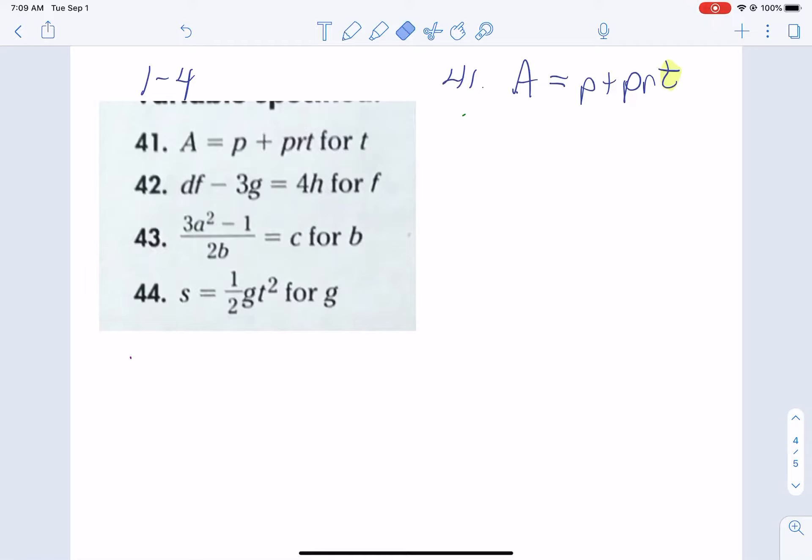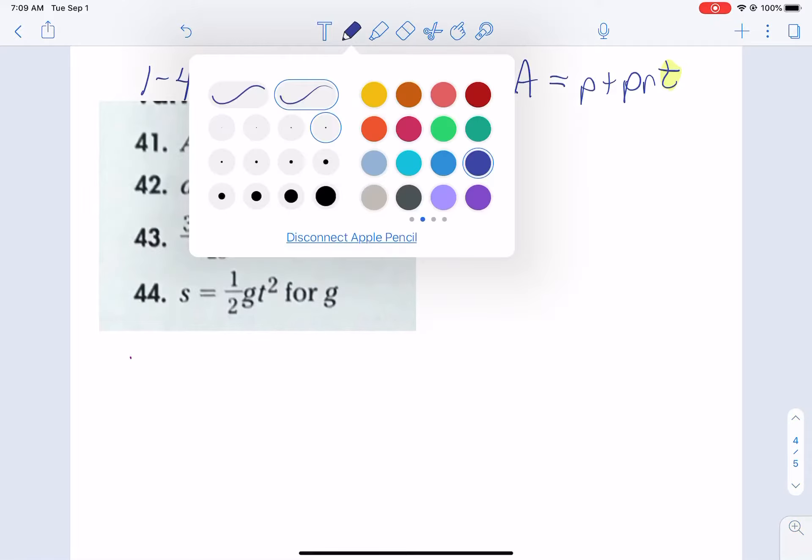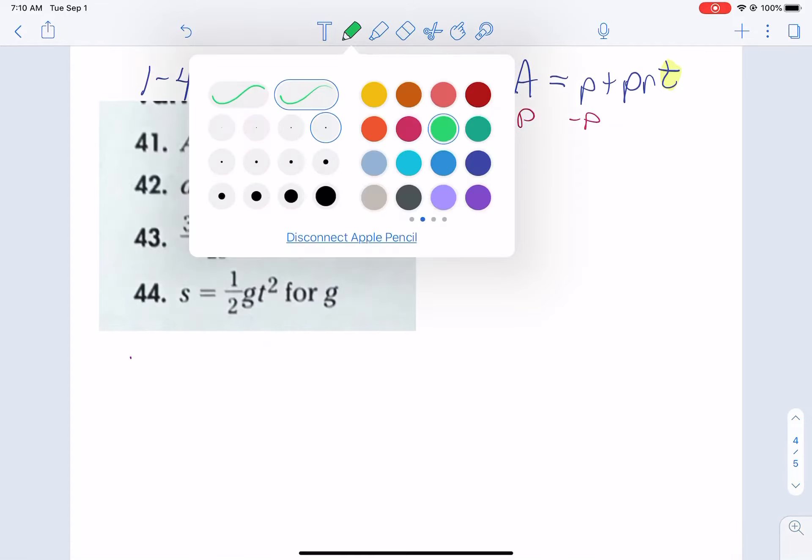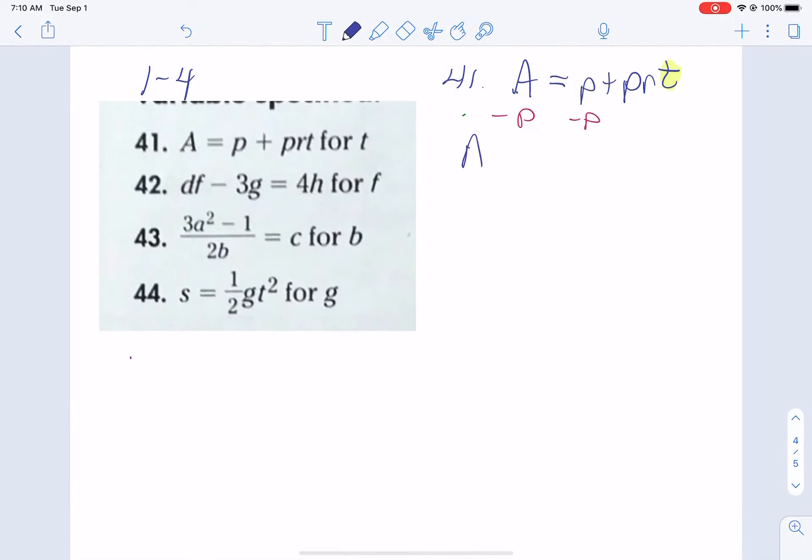If you were a number, what would I do with you? Well, this P here, we can subtract away. If that was a 4 that we've added on, we would subtract it. And we get A minus P equals PRT.